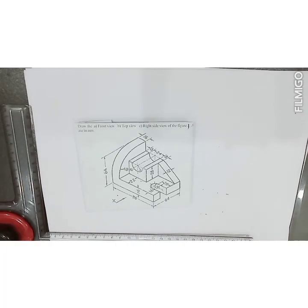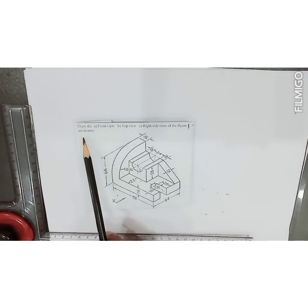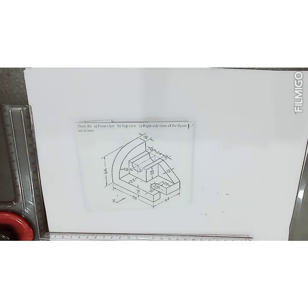Welcome to the discussion of orthographic projections. In orthographic projections, a pictorial view is given in the problem, and from that pictorial view we have to convert it into orthographic projections — that is, two-dimensional drawings. The given pictorial view asks us to draw the front view, top view, and right side view of the figure, with dimensions in millimeters.